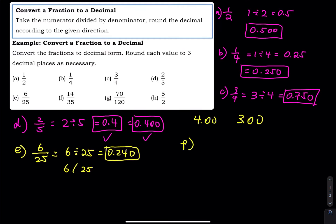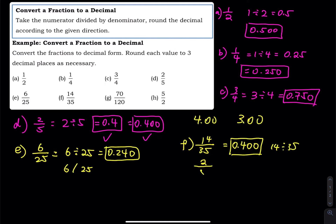Part F is 14 divided by 35. So you take 14 divided by 35. We can reduce this fraction: 14 is 2 times 7, and 35 is 5 times 7. Since they share 7 in common, divide top and bottom by 7 — 14 divided by 7 is 2, 35 divided by 7 is 5 — giving 2 over 5, which equals 0.4.